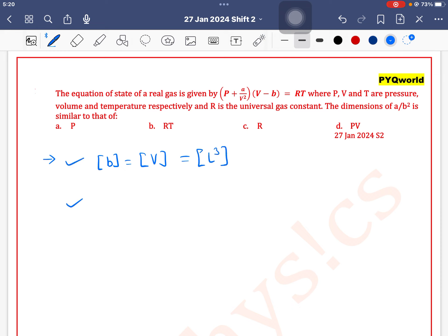Okay, now we will find dimension of A. In this term, dimension of pressure and dimension of A by V square must be equal. So dimension of A is equal to dimension of P into dimension of V square. What is the dimension of pressure?